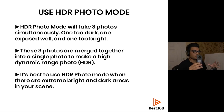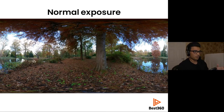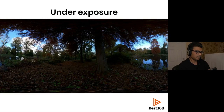There's another photo mode called HDR, which takes three photos simultaneously: one that is too dark, one that is exposed well, and one that is too bright. These photos are merged together into a single high dynamic range photo. It's best to use HDR photo mode when there are extreme bright and dark areas in your scene. When a 360 camera takes an HDR photo, one of them is normal exposure — notice how the sky may be blown out. The second photo is too dark so it can capture the brighter areas like the sky.